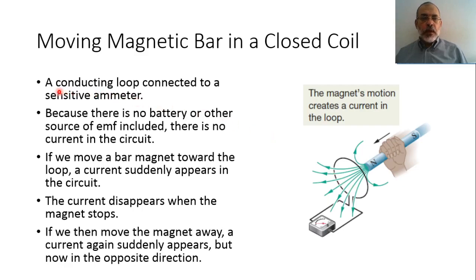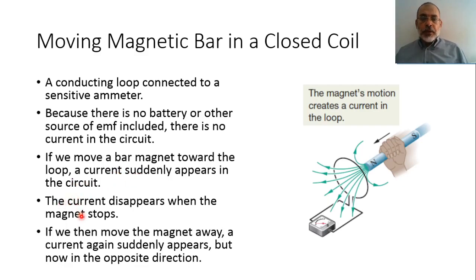Briefly, for a moving magnetic bar in a closed conducting loop connected to a sensitive meter — and because there is no battery or other sources of electromagnetic force, there is no current initially. Now, if we move a bar magnet toward the loop, current suddenly appears in the circuit — not continuously. This current disappears when the magnet stops. Once the magnet stops, the sudden current will stop.